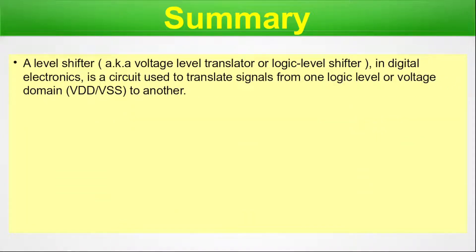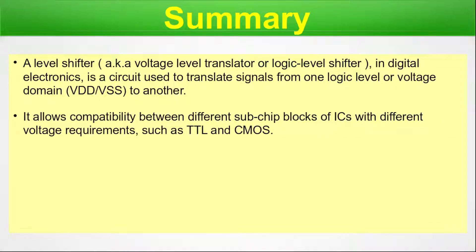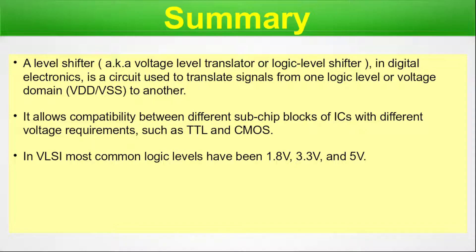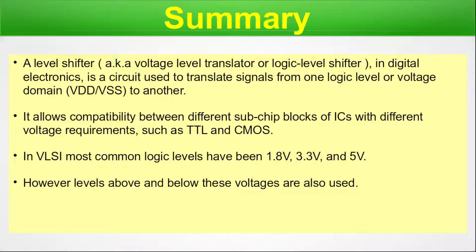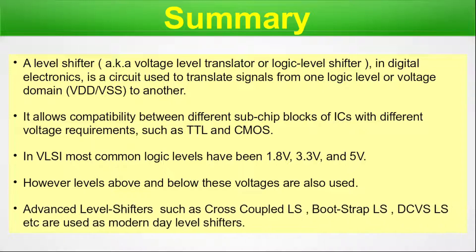Summary. A level shifter, also known as a voltage level translator or logic level shifter, is a circuit used in digital electronics to translate signals from one logic level or voltage domain to another. It allows compatibility between different sub-chip blocks of an IC with different voltage requirements, such as TTL and CMOS. In VLSI, the most common logic levels have been 1.8V, 3.3V, and 5V, though levels above and below these are also used. Advanced level shifters such as cross-coupled LS, bootstrap LS, and DCVS LS are used as modern day level shifters.